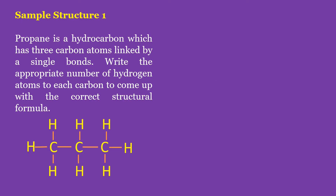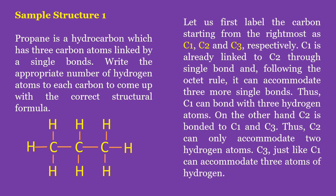In sample structure number one, propane is a hydrocarbon which has three carbon atoms linked by single bonds. Write the appropriate number of hydrogen atoms to each carbon to come up with the correct structural formula. Label the carbons starting from the rightmost as carbon number one, two, and three. Carbon number one is already linked to carbon number two through a single bond, and following the Octet Rule, it can accommodate three more single bonds — thus bonding with three hydrogen atoms. Carbon number two is bonded to carbon number one and carbon number three, so it can only accommodate two hydrogen atoms. Carbon number three, just like carbon number one, can accommodate three atoms of hydrogen.